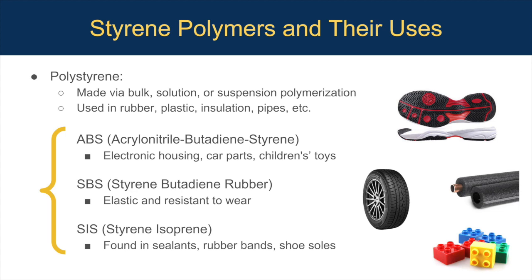Styrene monomers are often co-polymerized to achieve different characteristics. Most often, it is polymerized with acrylonitrile, butadiene, and isoprene. ABS plastic is a sturdy thermoplastic that is very resistant to physical impacts and chemical corrosion, used in electronic housings and car parts. SBS rubber has elastic properties that give it more durability, and is therefore used in things like tires.